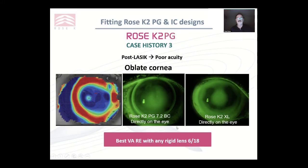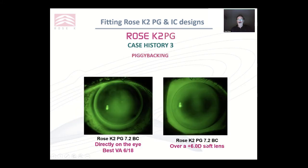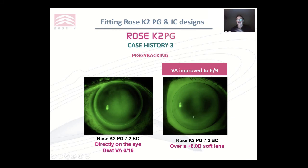The third case history was a woman with very poor vision in one eye who wanted to play golf. No matter what lens we put on, we couldn't get better than 6/18. With a PG design directly onto the eye, we had a lot of pooling. Even though we were flat here, we still got very significant pooling over that central area. So I decided to use a plus six disposable lens. Immediately we got touch in the right areas with a nice fitting pattern. The vision improved up to 6/9. She uses this lens just for golf — she puts it on to give her excellent vision.